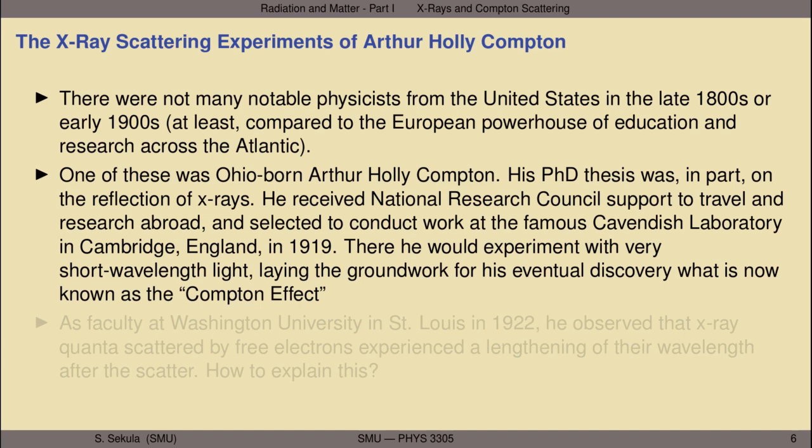After his PhD, Compton received National Research Council support and was free to travel and do research abroad. He selected to conduct work at the then-famous Cavendish Laboratory in Cambridge, England, in 1919. There he experimented with very short wavelength light, including x-rays and gamma rays, laying the groundwork for his eventual discovery of what is now known as the Compton Effect.